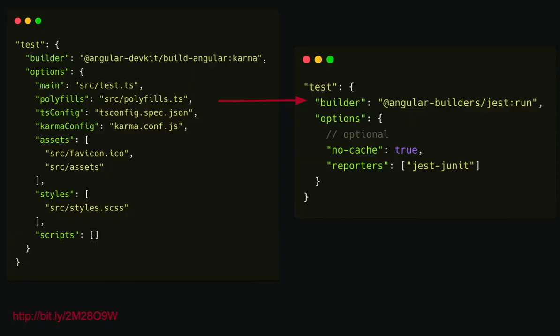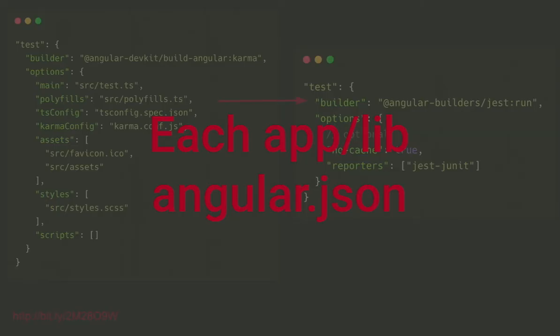Then we need to change a few lines in our Angular JSON. We say, okay, we want to use, instead of this builder, we want to use Angular Builders, of course, and it will be Jest. We can add some parameters. For example, we don't want to use caching. We want to use this or that reporter. And then we do it again for each of our applications and libraries. If you use NX, then you can choose between Jest and Karma. So you don't need to configure it. It comes out of the box.